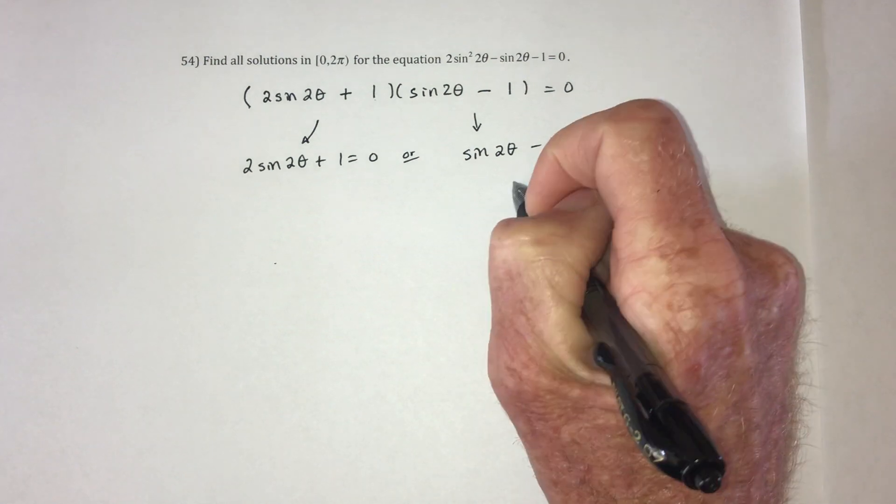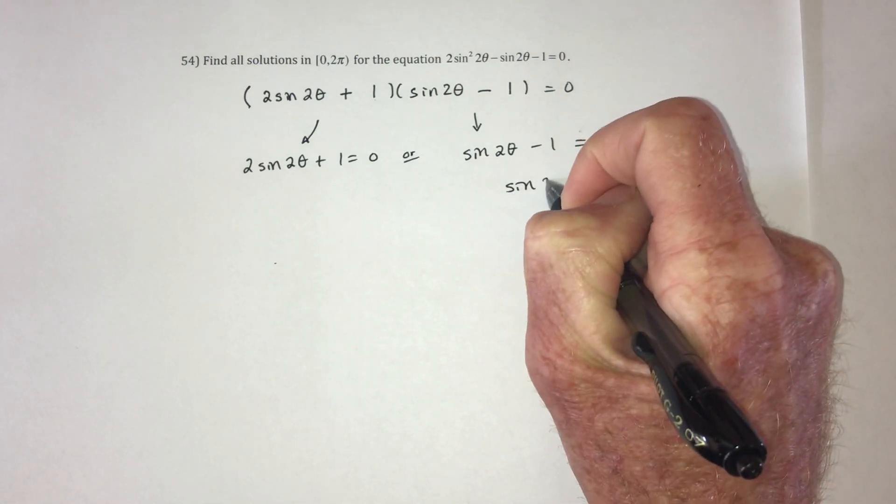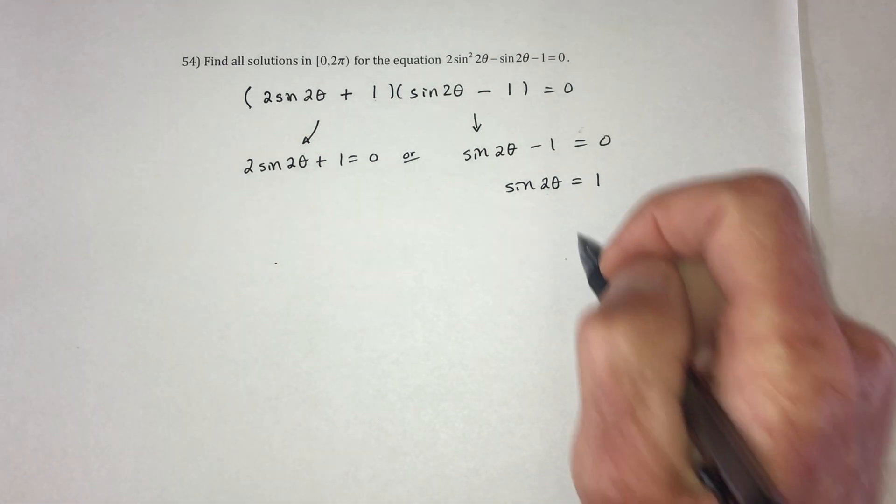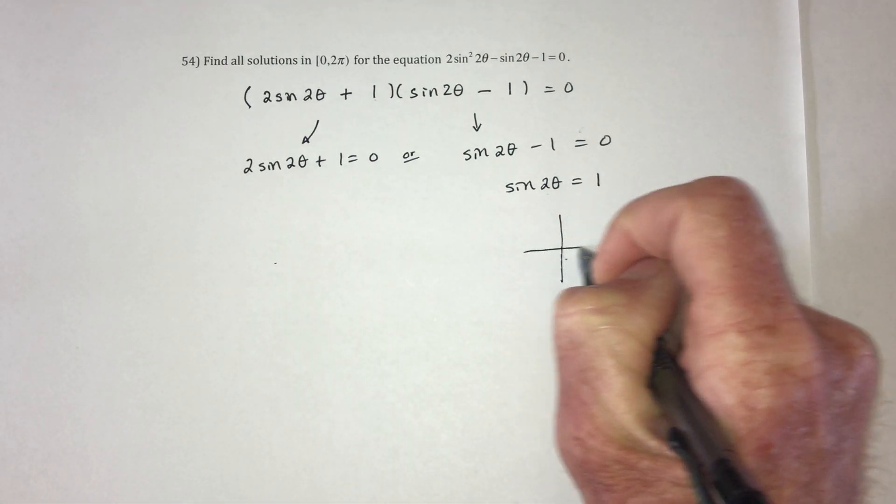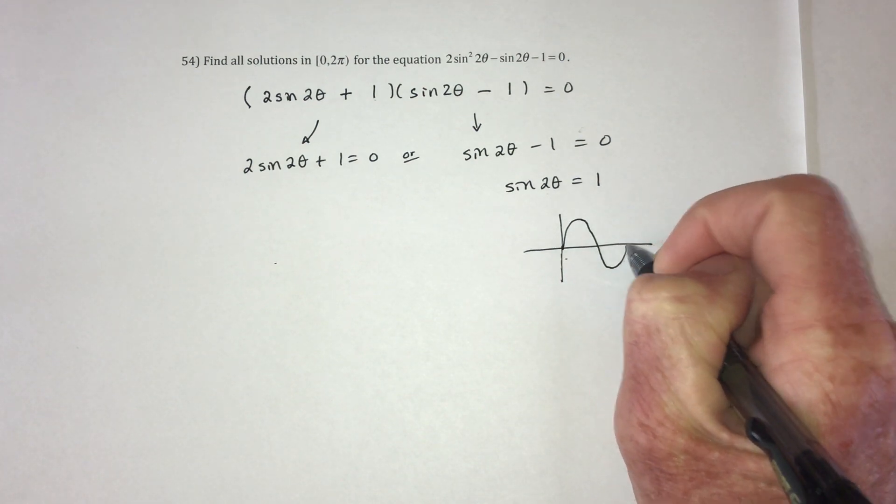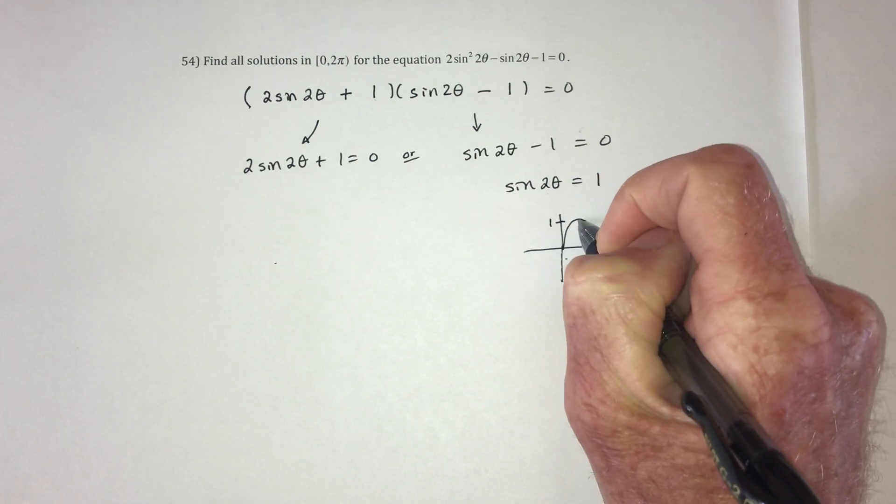Okay, so for this one, just add 1 to both sides. And that's basically saying, when does sine equal 1? So the sine graph looks like this. It equals 1 right here.